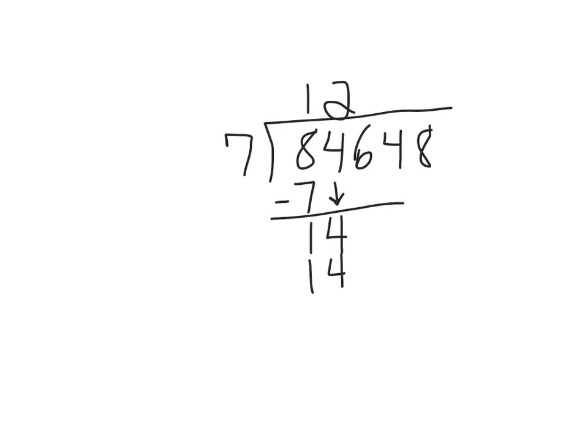So we subtract. 2 times 7 is 14, 14 minus 14 is 0, and then you bring down the 6.